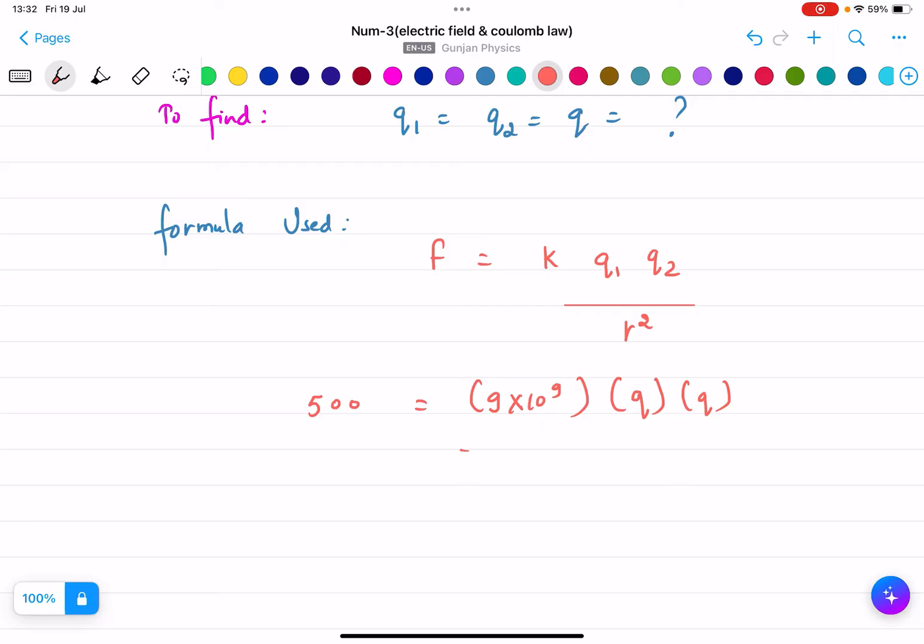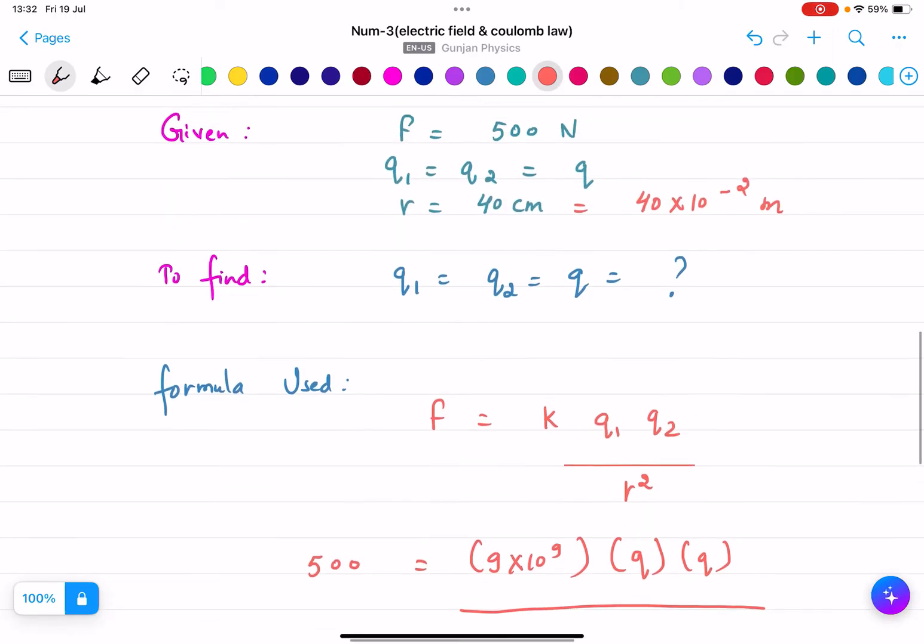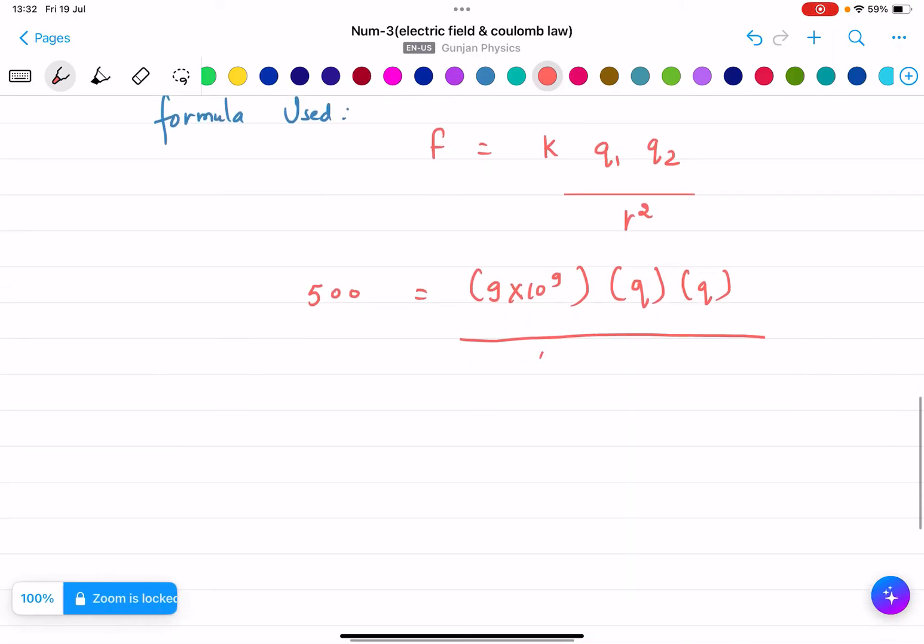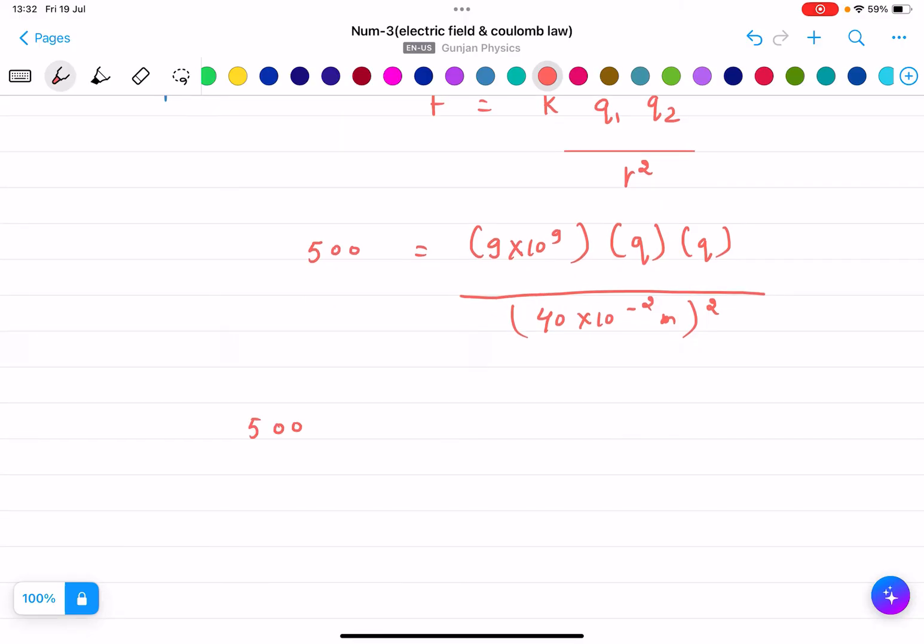So we can write 500 equals 9 into 10 to the power 9, q squared, by 40 into 10 to the power minus 2 meters squared.